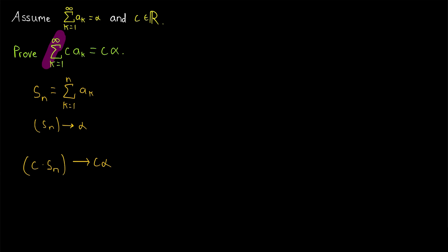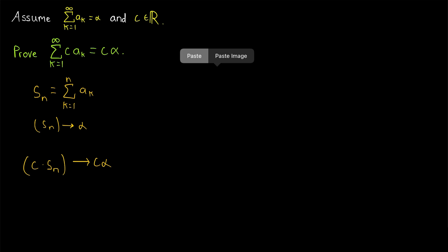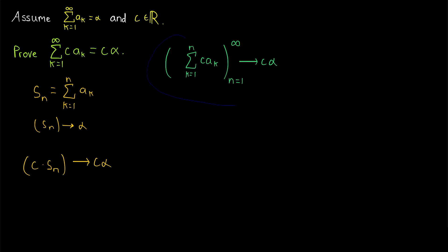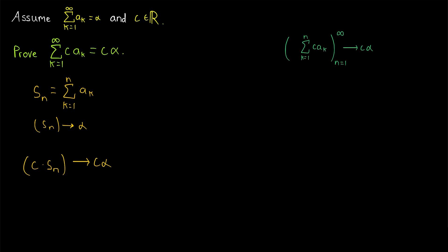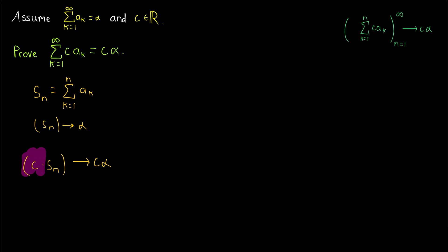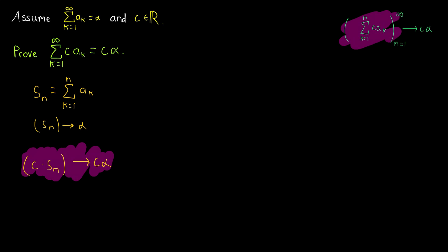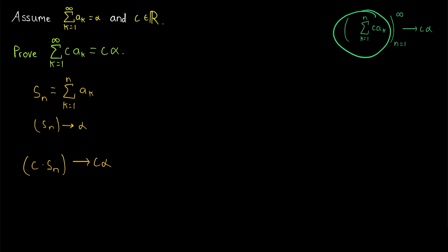To prove that this series converges to c times alpha, we just have to prove that the sequence of partial sums of the series converges to c times alpha. The idea from here on is pretty simple: all we're going to do is prove that the sequence c times Sn, which we know converges to c times alpha, is in fact the same as the sequence of partial sums of the new series — and so it must converge to c times alpha as well.